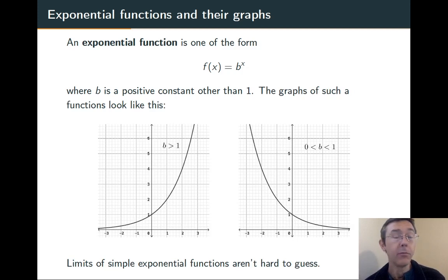Here's what the graphs look like. If b is bigger than 1, we get exponential growth on the left. If b is between 0 and 1, we get exponential decay on the right.